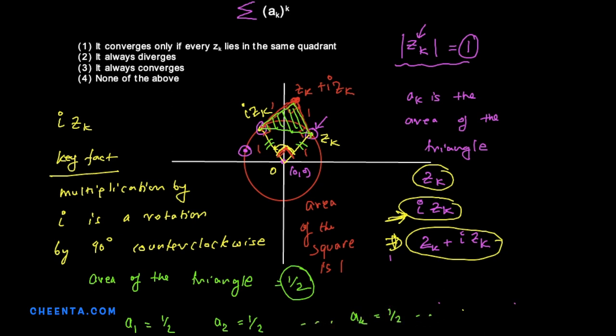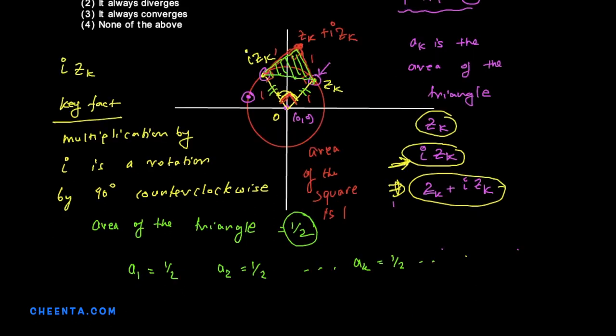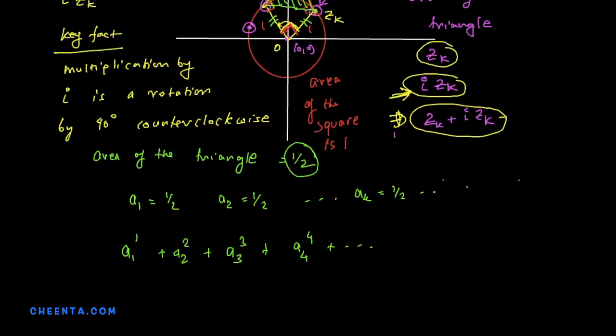And we can keep on doing this. And what were we interested in? We are interested in this particular series, a1 raised to 1 plus a2 square plus a3 cube plus a4 raised to 4 and so on. But notice that each of these things are half. So this is half plus 1 over 2 square plus 1 over 2 cube plus 1 over 2 raised to 4, etc.